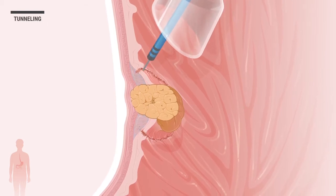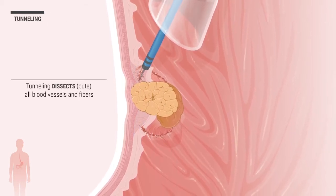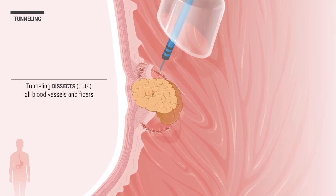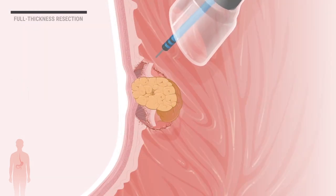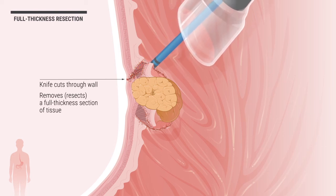After which, the knife is used to tunnel under the tissue. Next, the knife is used to cut through the wall, removing a full thickness section of tissue, including the tumor.